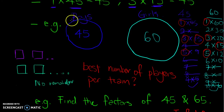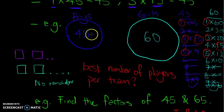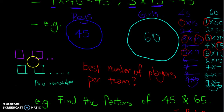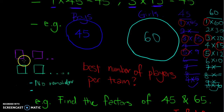So why do we need factors? One good example: suppose I have 45 boys and a group of 60 girls, and I want to split the boys into groups with no remainder, and also split the girls into groups with no remainder. The second condition is that the number in each group must be the same.